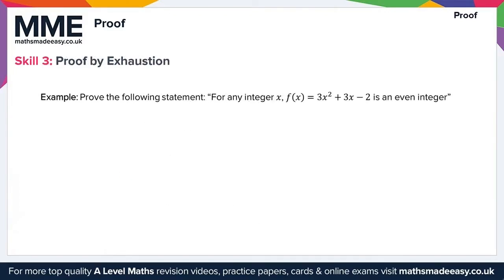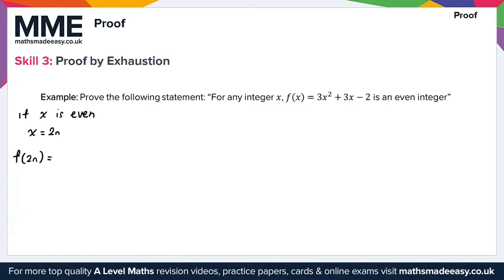Moving on to skill 3: proof by exhaustion. In a proof by exhaustion, you break situations into two or more cases and try all possibilities to prove the statement holds true for each case. Here we're asked to prove that for any integer x, f(x) = 3x² + 3x − 2 is an even integer. We split into two cases: when x is even and when x is odd. For the first case, when x is even, we write x = 2n and substitute to get f(2n) = 3(2n)² + 3(2n) − 2.